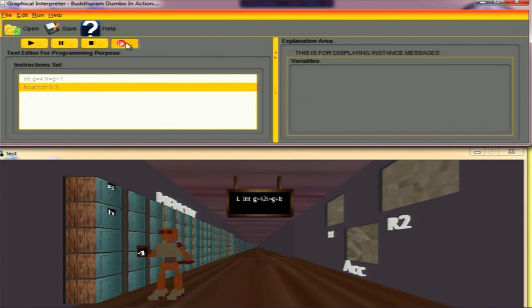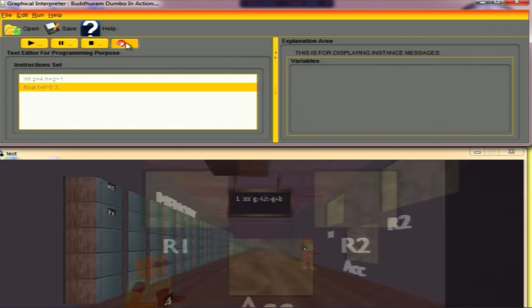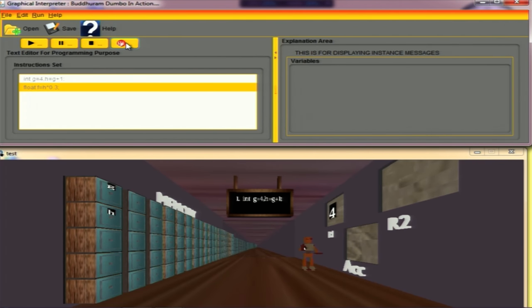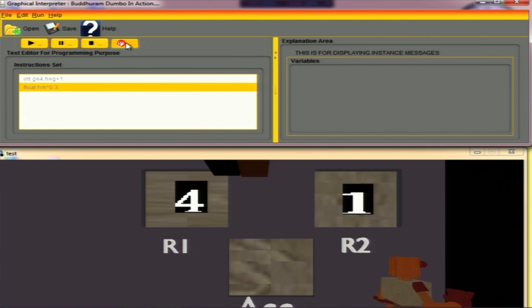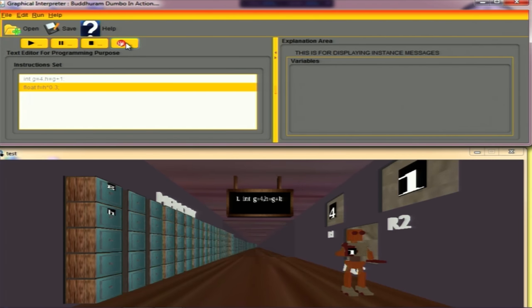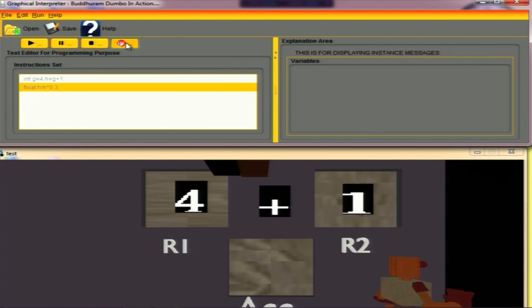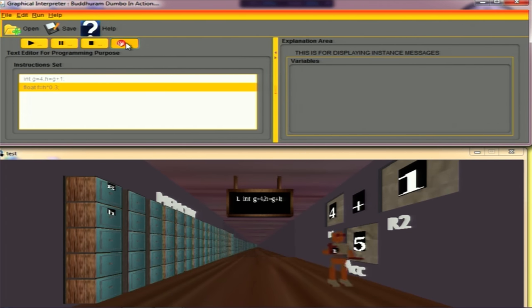Now it grabs 4, the value of g, and puts it into the box of g. Now it has to calculate the value of h. Initially it has to get the value of g, takes it, puts it in register 1 that is R1, takes the value from display as 1, keeps it in register 2, and now it evaluates the value of h, that is 4 plus 1, that is 5. Now it will keep this value to the box of h.